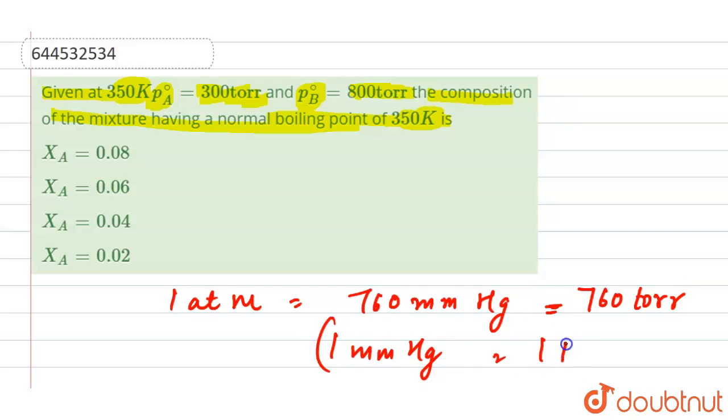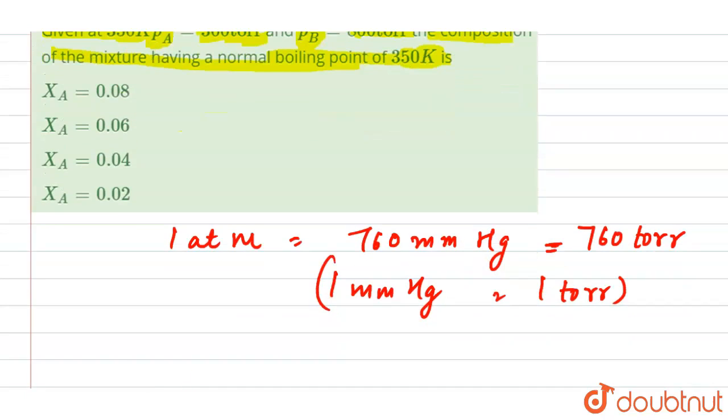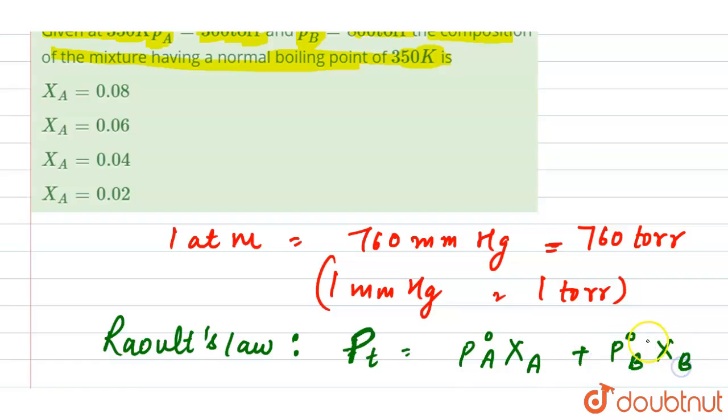Now we will use Raoult's law. By using Raoult's law, we have that P_T is equal to P⁰_A × X_A plus P⁰_B × X_B.